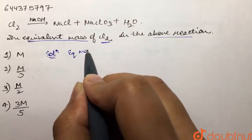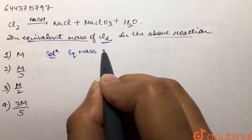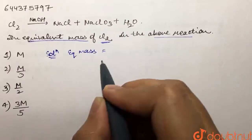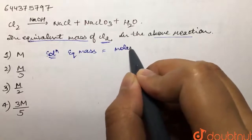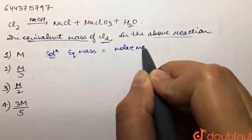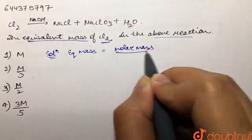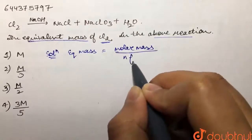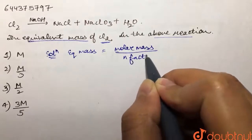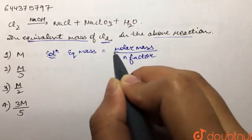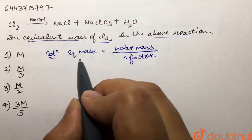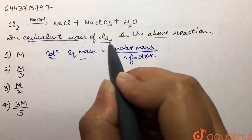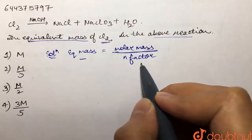Now, what is equivalent mass? Equivalent mass is equal to molar mass divided by the n factor. We are asked the equivalent mass of chlorine, so we are going to find out the n factor for chlorine.